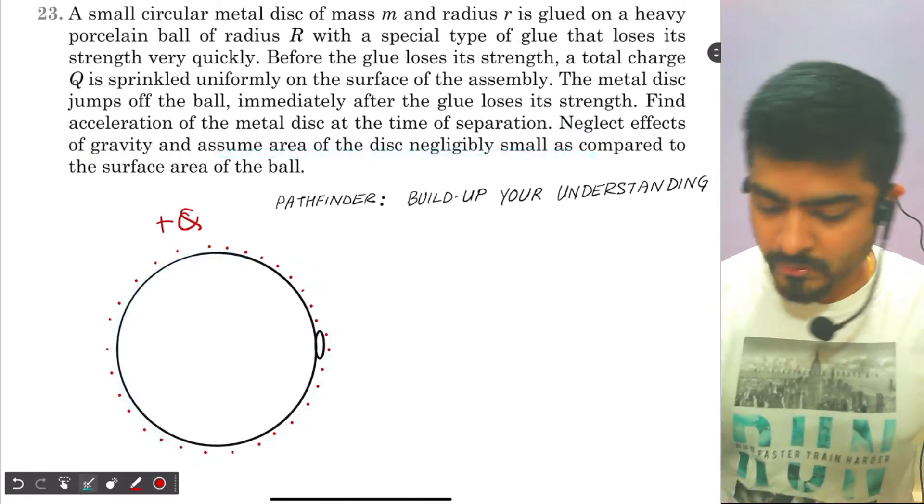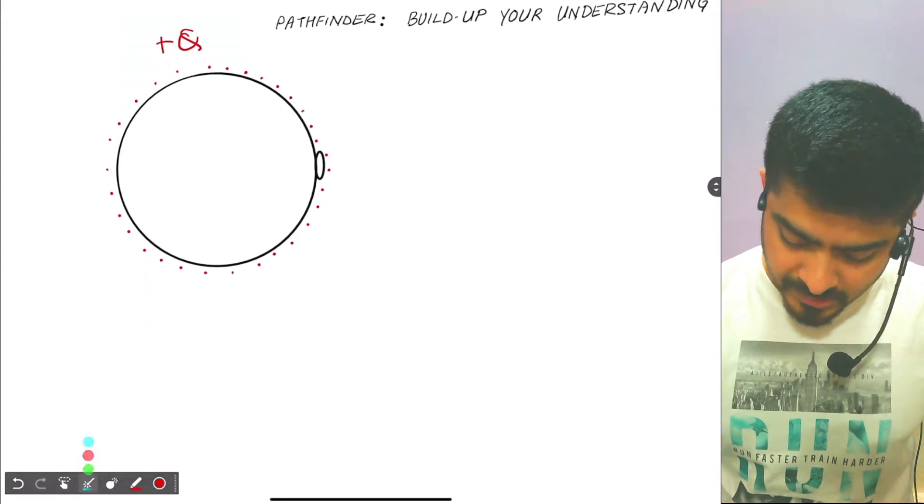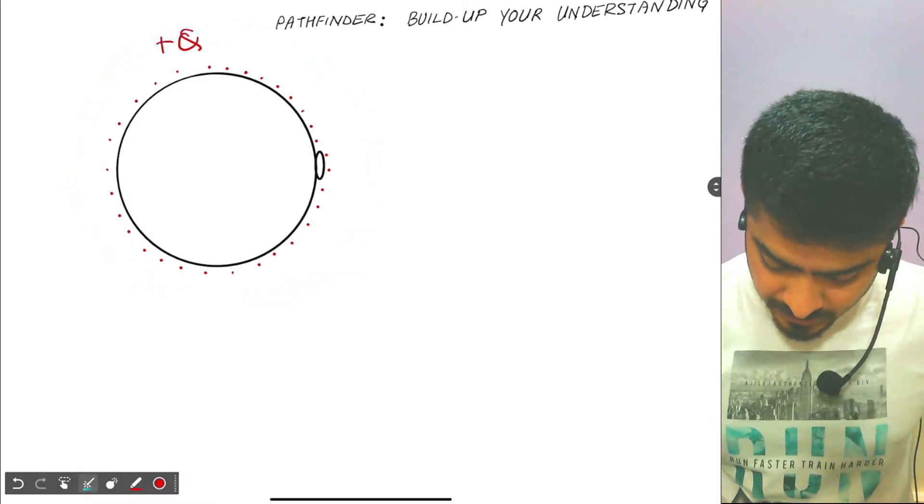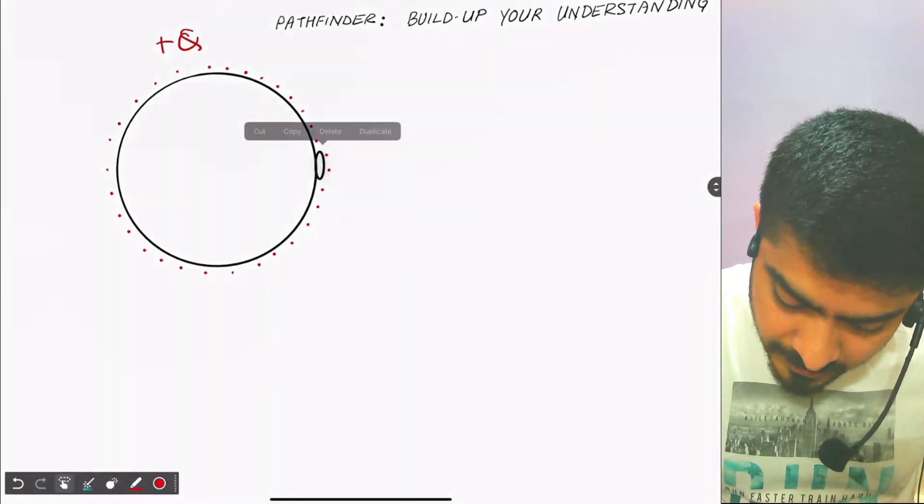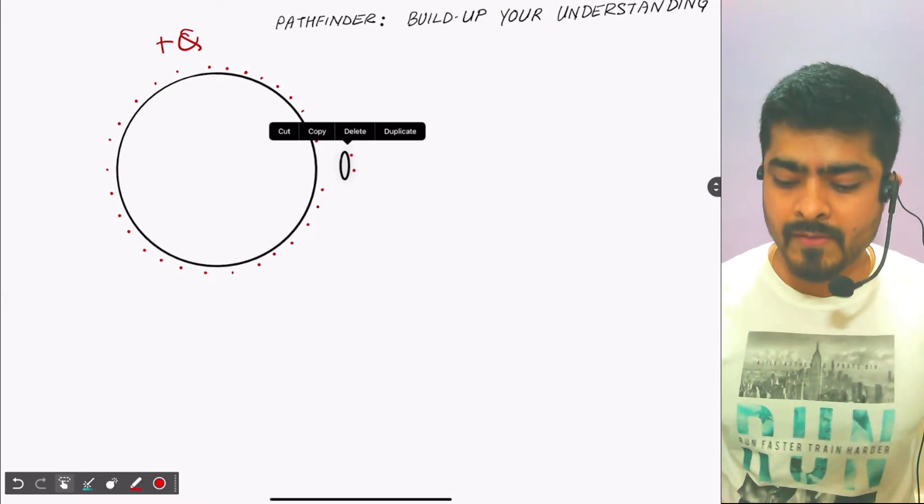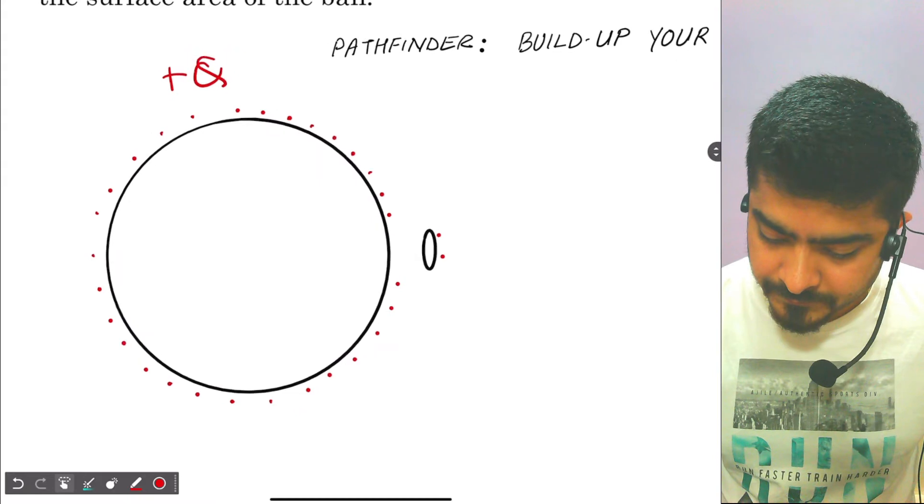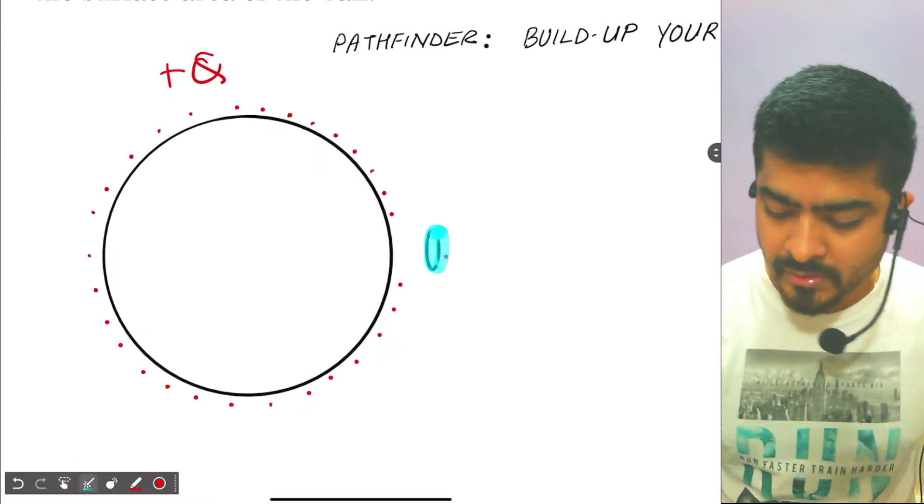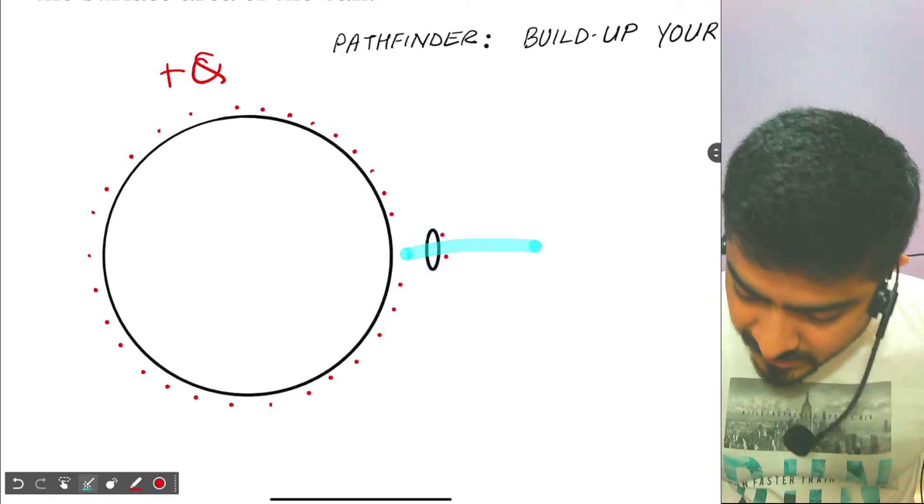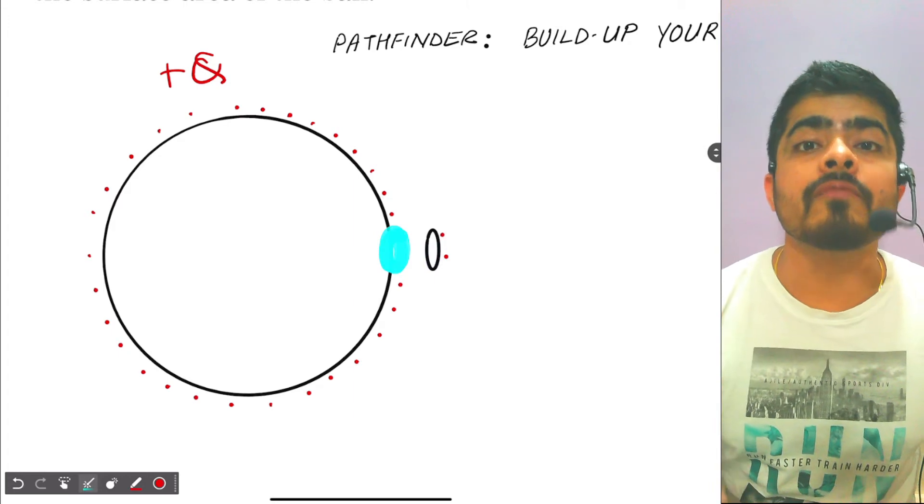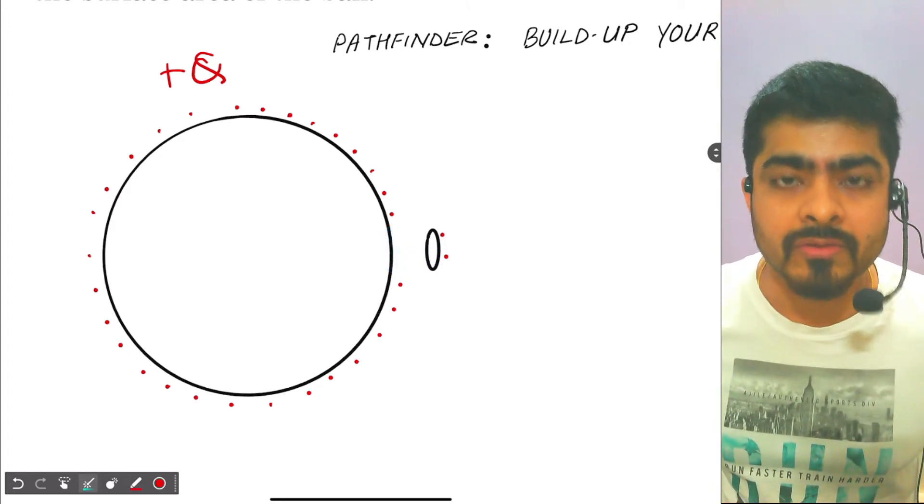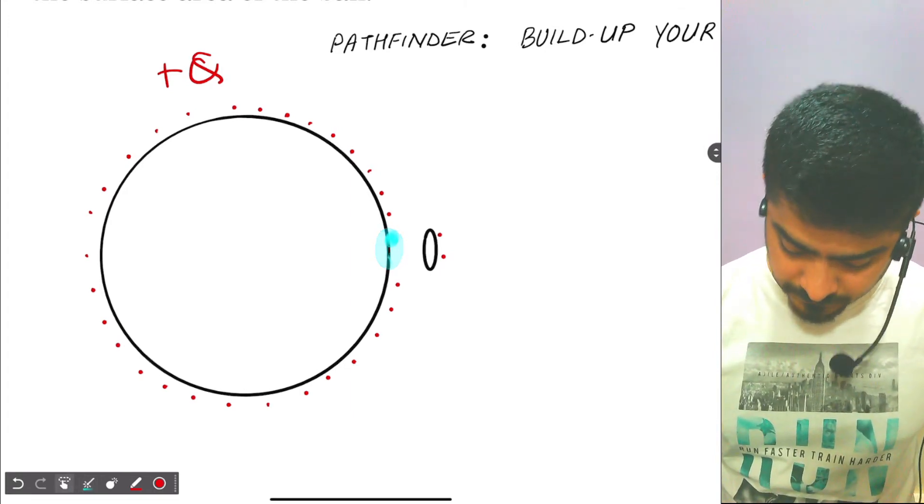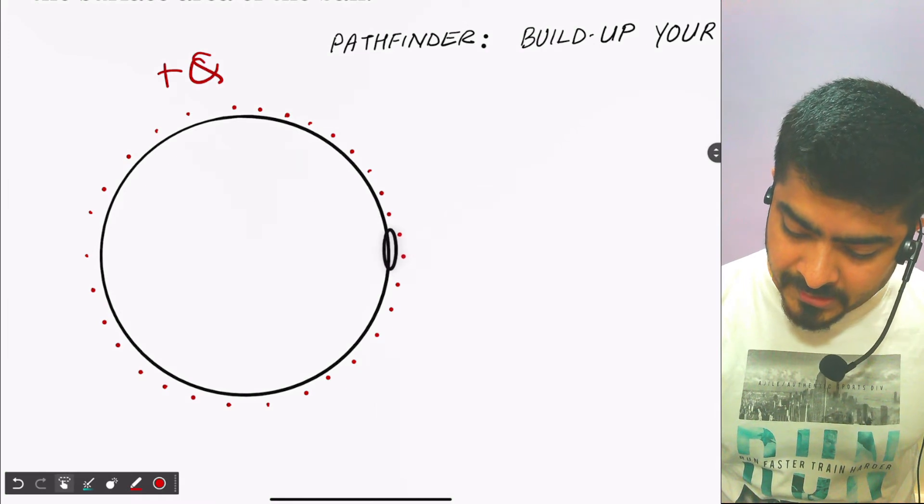So let's see how to solve this. Now this is your initial system. Just after the glue loses its strength, the disc will try to separate off. Now if you see what happens over here, the charge that is sprinkled on the disc is also going away with the disc. So there is a small space over here on the ball which will not be having any charge. Just before this goes away, it is still at this point.